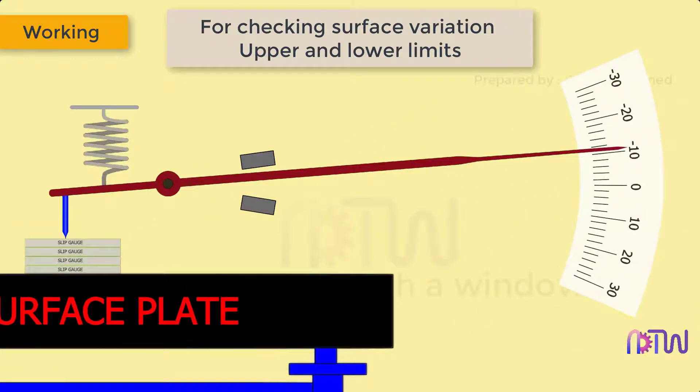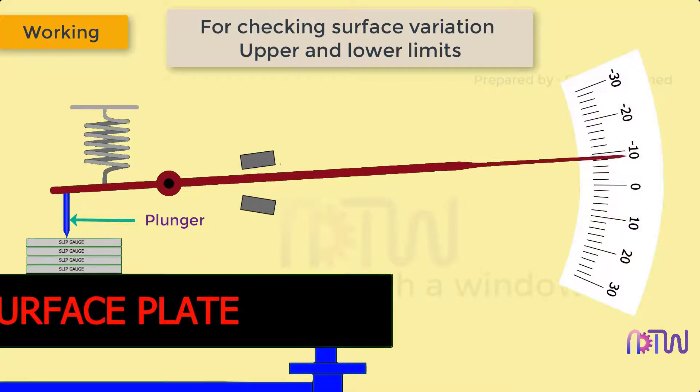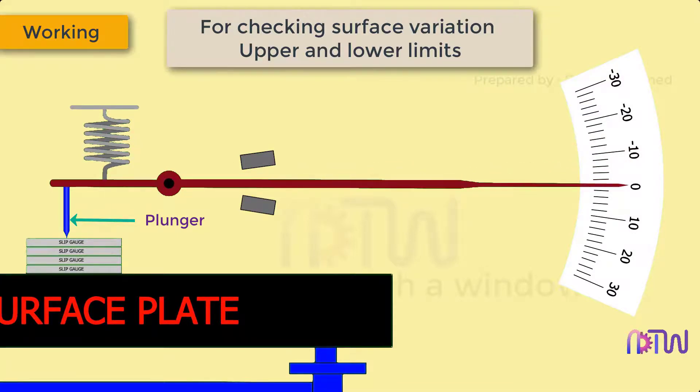After the pile of slip gauges is placed on the surface plate below the plunger, the pointer is set to zero. This can be done by increasing or decreasing plunger length. On the actual comparator, a provision such as an adjusting screw will be provided.